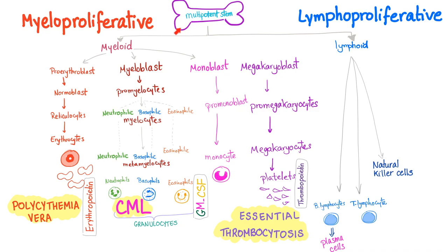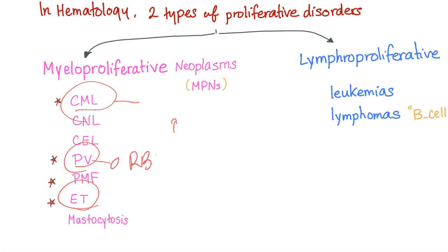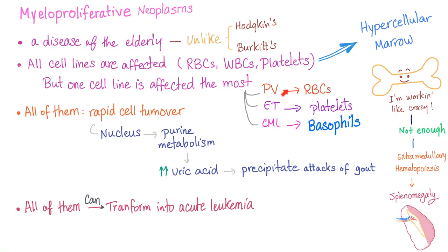In my hematology playlist we talked about myeloproliferative and lymphoproliferative disorders. In myeloproliferative neoplasms — including CML, polycythemia vera, and essential thrombocytosis — you have increased levels of RBCs, granulocytes, and thrombocytes. In CML it's mostly basophils, in polycythemia vera it's mostly RBCs, and in essential thrombocytosis it's mostly platelets.